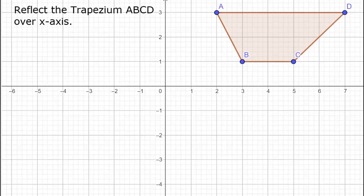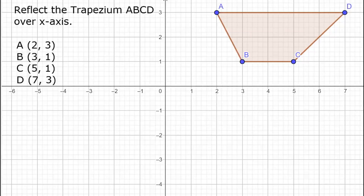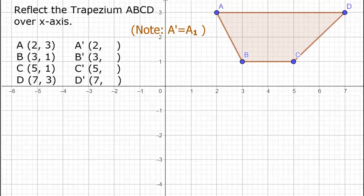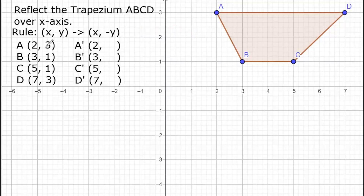For example, we have trapezium ABCD and we are going to reflect it over the x-axis. That means our x-axis is our line of symmetry. First, we identify the coordinates of A, B, C, and D. A is (2, 3), B is (3, 1), C is (5, 1), and D is (7, 3). We will list the new coordinates as A₁, B₁, C₁, and D₁. When we do a reflection over the x-axis, we retain our x values and change the sign of our y values.